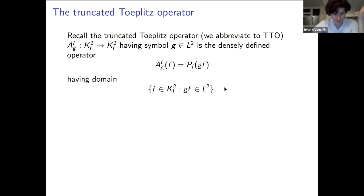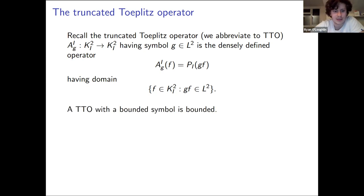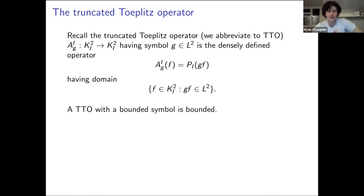You could equally define this densely on the domain of all bounded functions in your model space — it's just a matter of convention; everything works out the same. A truncated Toeplitz operator with a bounded symbol is bounded, since multiplication by a bounded symbol is a bounded operation and projections are always bounded — it's just a composition of two bounded maps.